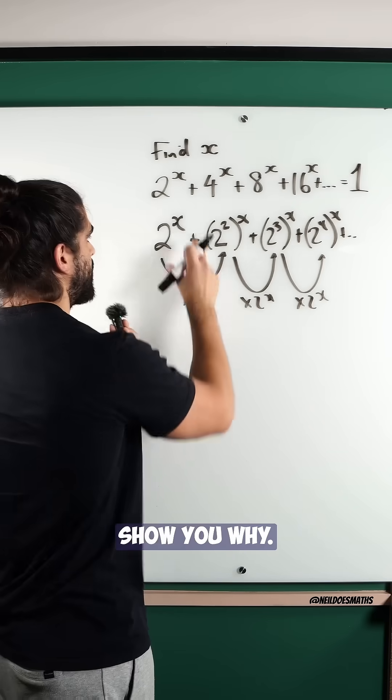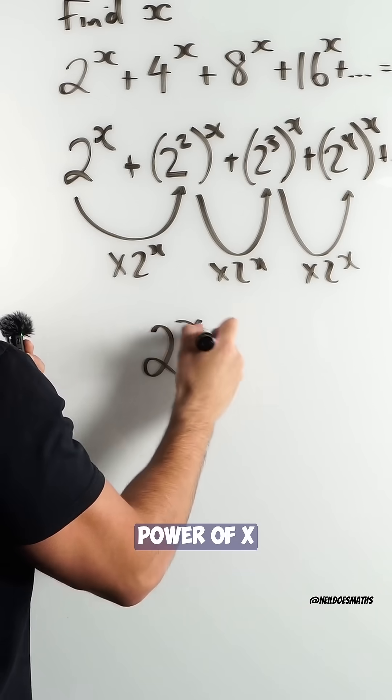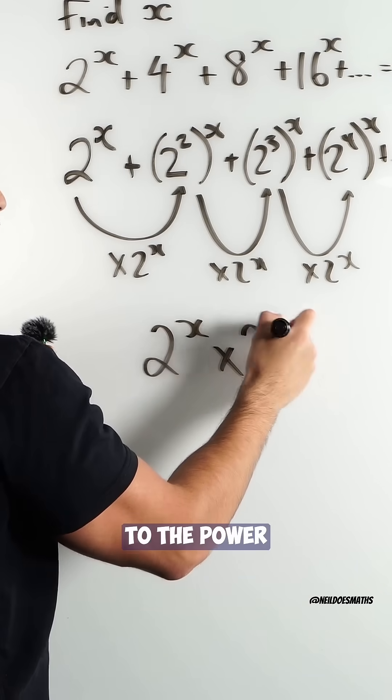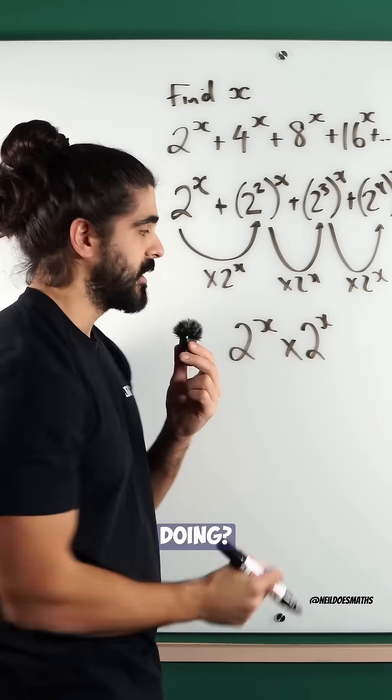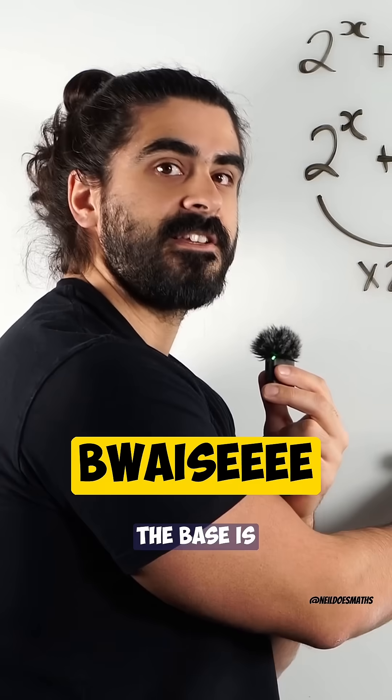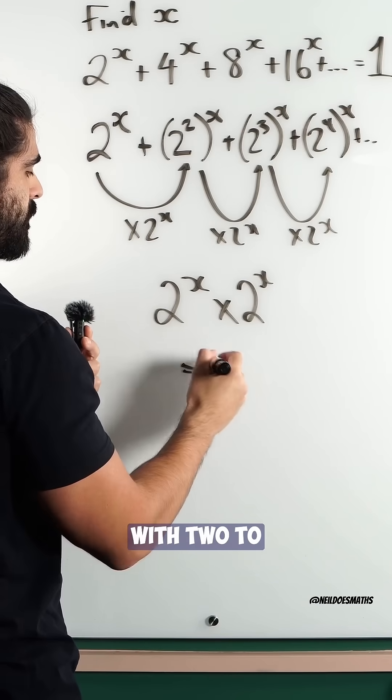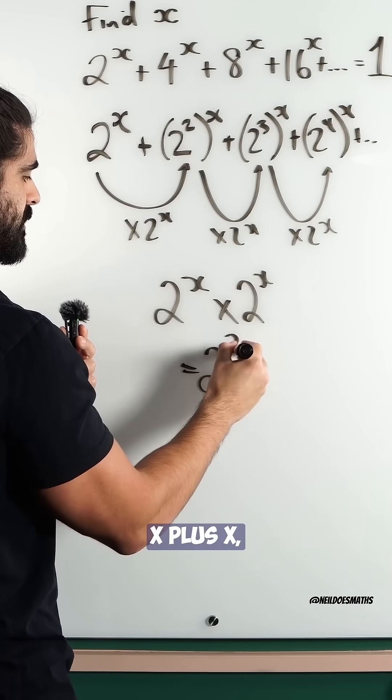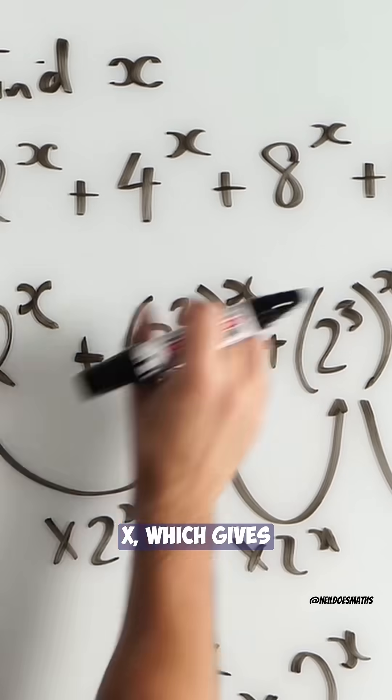And I'll show you why. If you take 2 to the power of x and you multiply it by 2 to the power of x, what are you doing? You're adding the powers using our index rules because the base is the same. So we're left with 2 to the power of x plus x, which is 2x, which gives you this term.